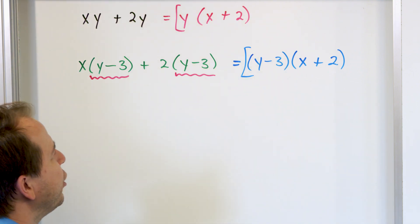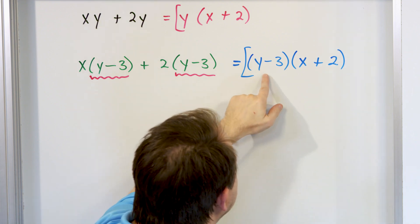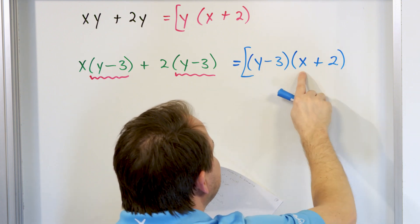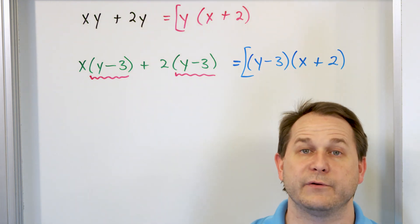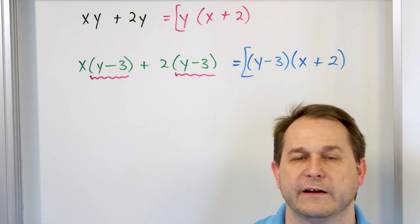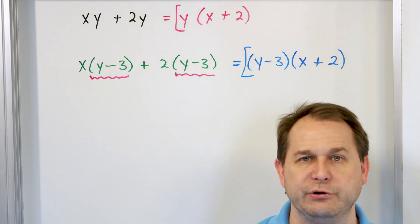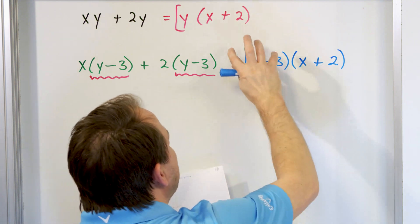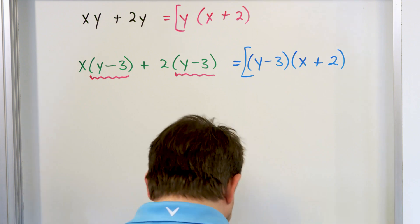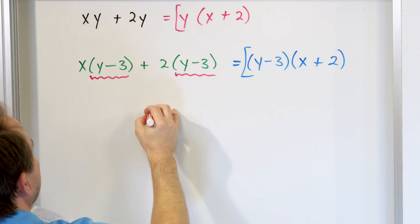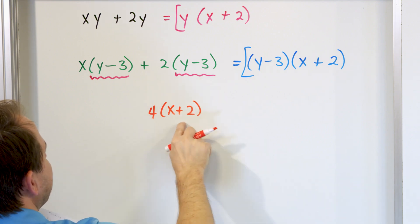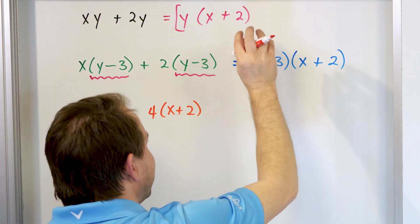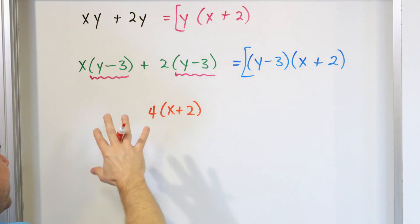If you think about it, it makes perfect sense because what we've done in the past is take y times x and y times 2, then take negative 3 times x and negative 3 times 2 — every term on the outside gets multiplied individually and distributed in. That's what distribution and FOIL really are. But you can also think of y minus 3 as one big thing on the outside, just like if it were 4 times x plus 2, the 4 would multiply each term. Here it's an entire term doing that same job. That's why they're equivalent to one another.